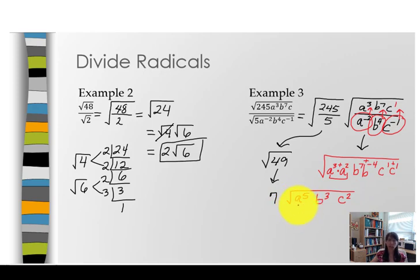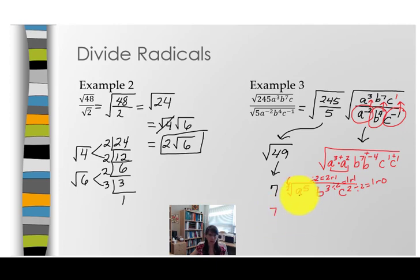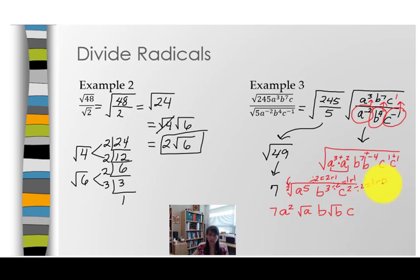Now the only thing remaining is checking to see if any of these variable bases will clear the radical. So what we're doing here is dividing each exponent by the index. Since it's square root, we know the index is 2. So 5 divided by 2 is 2 remainder 1. 3 divided by 2 is 1 remainder 1. And 2 divided by 2 is 1 remainder 0. We'll go back to the numerical base of 7. With base a, 2 remainder 1 means 2 bases of a clear, but 1 remains under the radical. For base of b, 1 remainder 1. That means 1 base of b clears and 1 base of b remains. Base of c, 1 remainder 0 means base of c clears and none of base c remains.